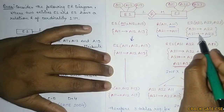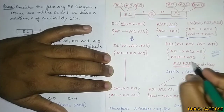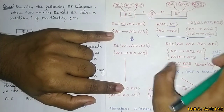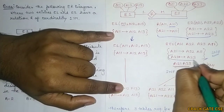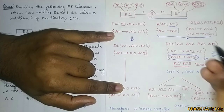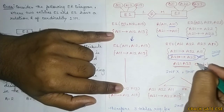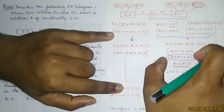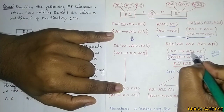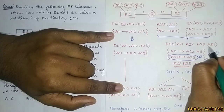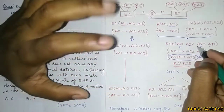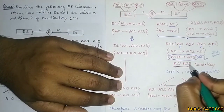The functional dependency after merging: A21 defines A11 and A22. A21 also has a multi-valued dependency defining A23. When finding the candidate key, we do not generally consider multi-valued dependencies since those are handled in 4NF. From the right-hand side of regular FDs, we get A22 and A11, but not A23. Therefore the candidate key is {A21, A23}.